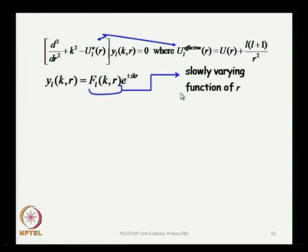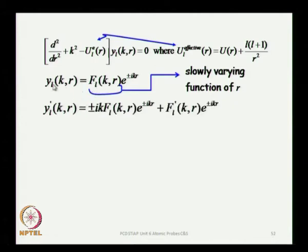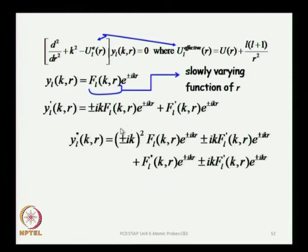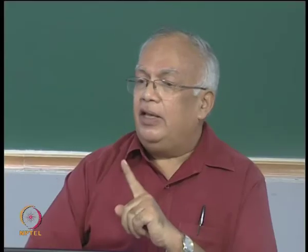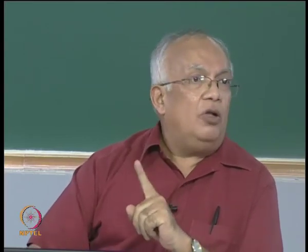F is a slowly varying function of r. Taking its first derivative — the derivative of the product — we get ±ik·F·e^{±ikr} plus the derivative of F. Taking the second derivative yields three terms: the ±ik squared term, a cross term ±2ik·F', and F double prime, all multiplied by e^{±ikr}. Now we have y, y', and y'' expressed in terms of F, and we substitute all of them into the differential equation.